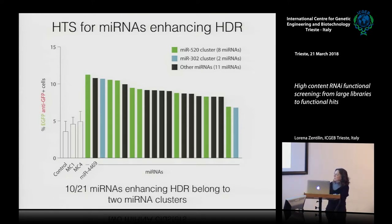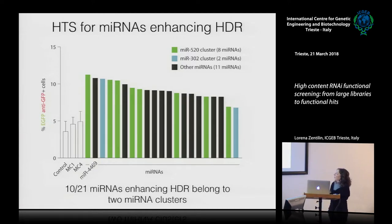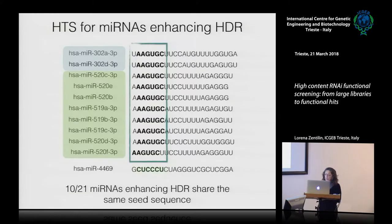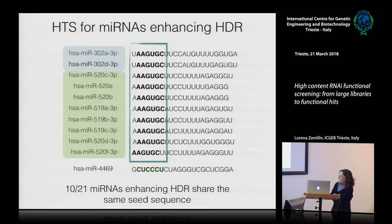Analysis of these 21 microRNAs immediately revealed that 10 of them can be grouped into two clusters: the microRNA-520 family and the microRNA-302 family, which share the same consensus seed sequence. Another microRNA that was very effective in inducing homologous recombination was miR-4469, which belongs to a different family.